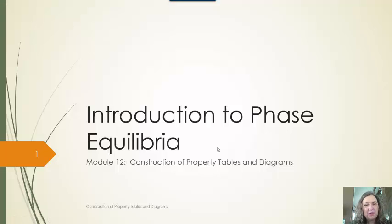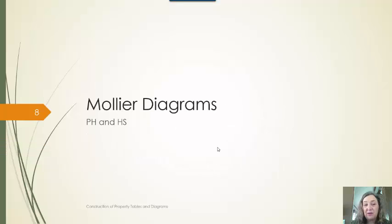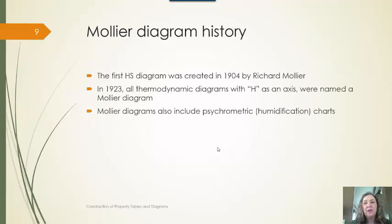As we continue this module, we're going to be looking at Mollier diagrams. A Mollier diagram typically is going to be either P-H or H-S diagrams. Specifically, a Mollier diagram is going to be anything that includes H as one of the two axes.